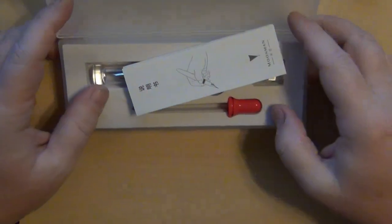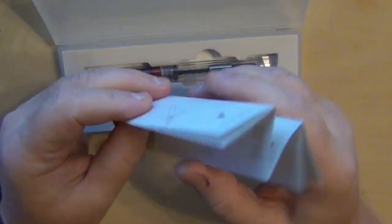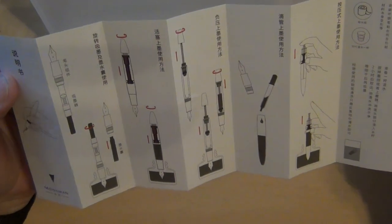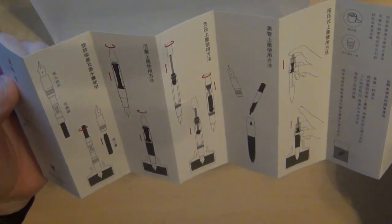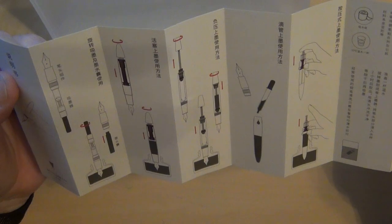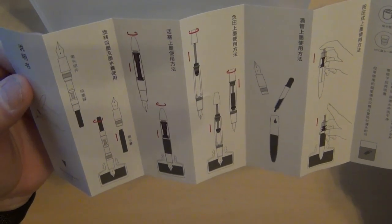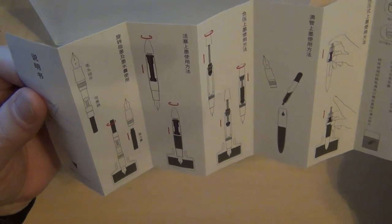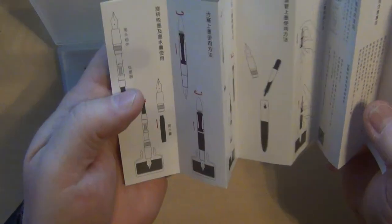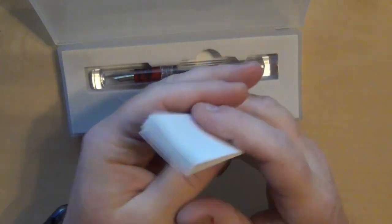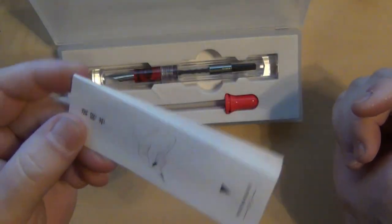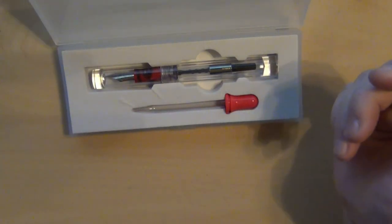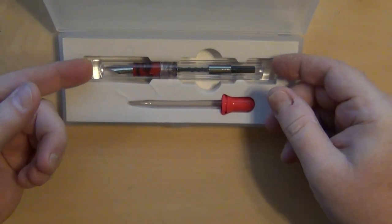The Moonman C1 has some generic instructions that come for all kinds of different filling mechanisms, which is actually kind of neat. Obviously it's not tailored for this, but whether you've got a button filler or an eyedropper, or you have a plunger filler, or a vac filler, or a piston filler, or a cartridge converter, it's all right here in this instruction booklet, which is actually not a bad thing to cover all the bases.